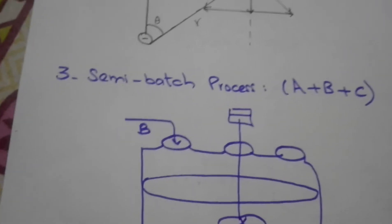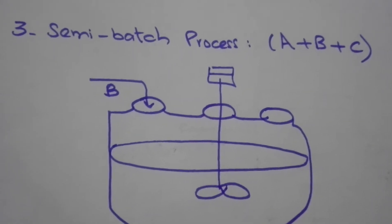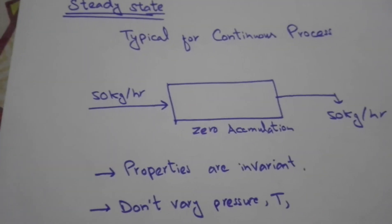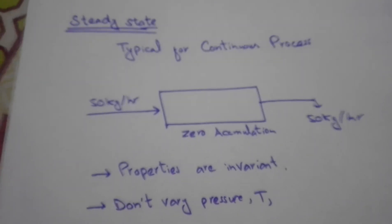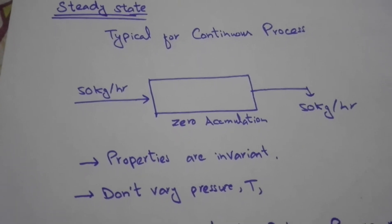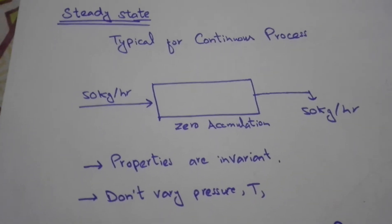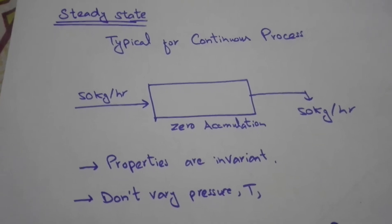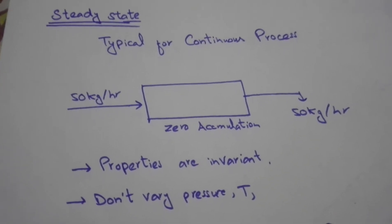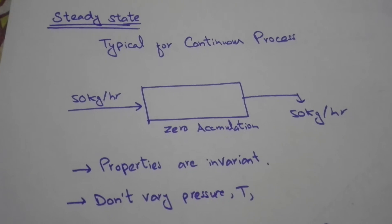The next important thing is steady state process. This is typically for continuous process. In this system, we are putting in 50 kg and 50 kg is going out. Input equals output - zero accumulation.